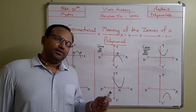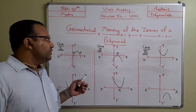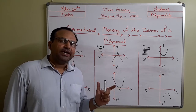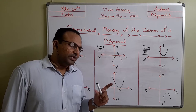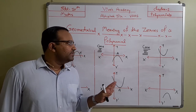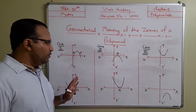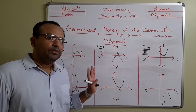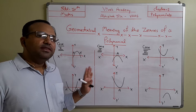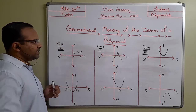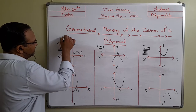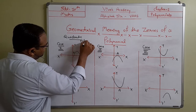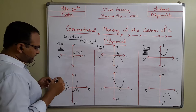In the quadratic polynomial, we have seen the geometric meaning of zeros. The graph cuts the x-axis at exactly two distinct points. Now if we go further, there are three different cases discussed in the book. These don't need to be drawn by students, but they are for explanation purposes and can come in the examination — the graph will be given and you have to tell how many zeros are possible.